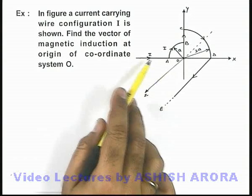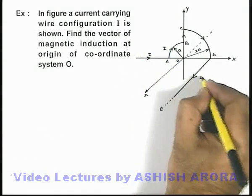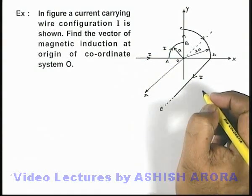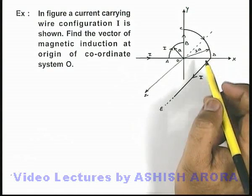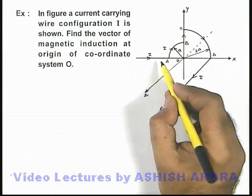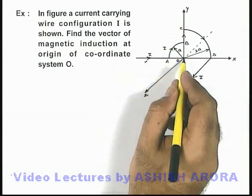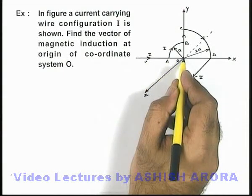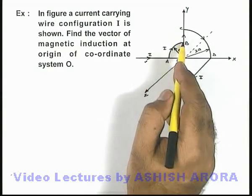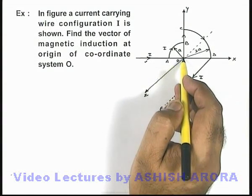Here we can see that a current I is flowing in this wire configuration. At the origin, we can say that due to this wire, magnetic induction will be zero because O is lying along the line of this wire. As well, due to wire BC, magnetic induction at O will be zero.